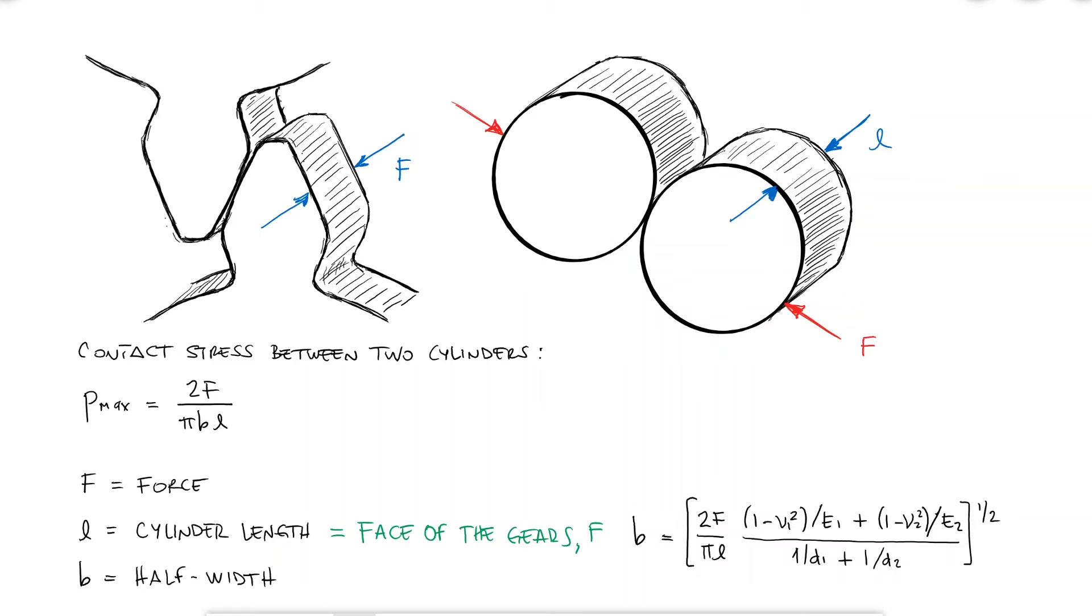The force pressing the two cylinders together, which causes a reaction with the same magnitude at the point of contact, would be the full force W, because we know this W force is normal to the surface of the teeth at the point of contact, which is exactly what is pressing the two teeth together.